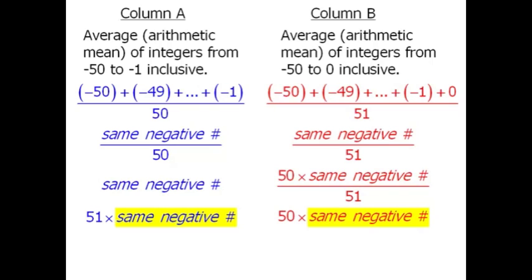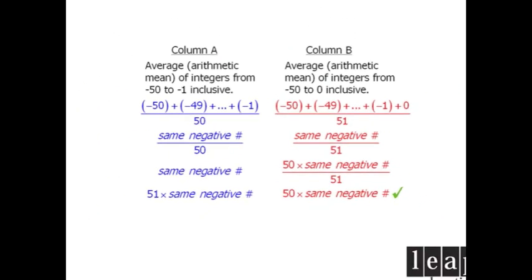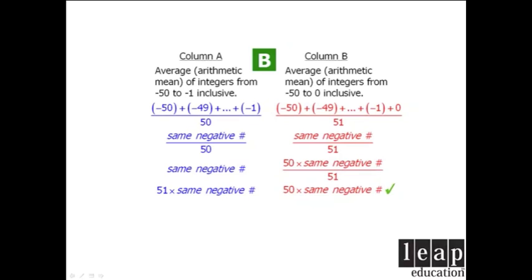Now, if both columns featured the same positive number, we would know that column A is greater than column B. However, since both columns feature the same negative number, we now know that column B is greater than column A, which means our answer is B.